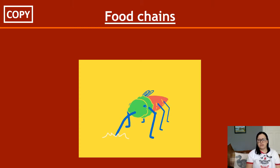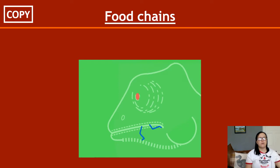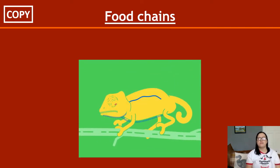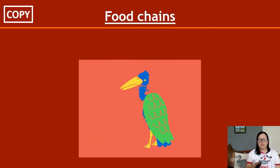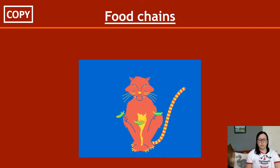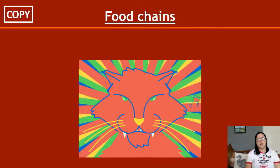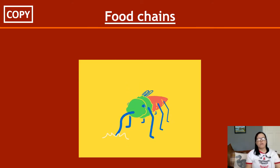A food chain is a diagram — it's not a real thing you can literally see in life with arrows pointing at stuff. It's a diagram that shows feeding relationships and the movement of energy between organisms. Food chains are important because they help us understand how an ecosystem works and how to minimize human damage on that ecosystem.